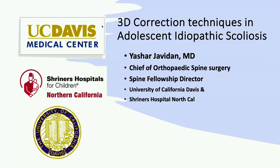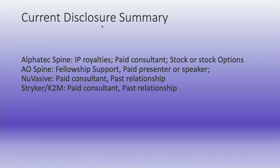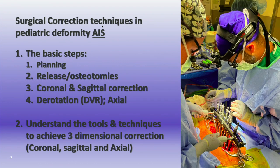Good morning, everyone. My disclosures are in the pamphlet. The topic of today is to review some of the planning and steps to achieve good three-dimensional correction in adolescent idiopathic scoliosis. We'll talk about release and osteotomies, coronal and sagittal plane correction, and very importantly, axial plane correction — also known as direct vertebral rotation — and understand some of the tools and techniques where we could do this.